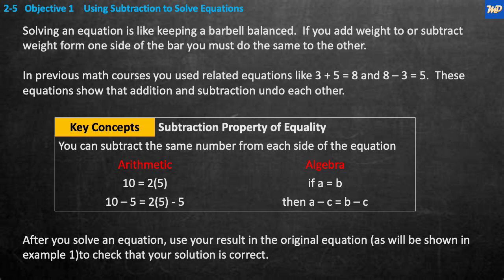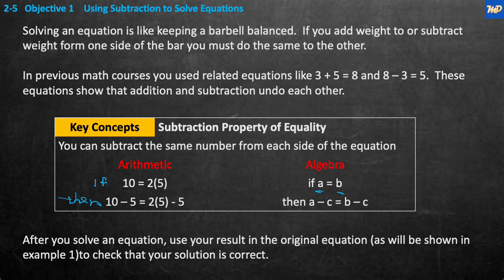You can subtract the same number from each side of an equation. Algebraically, if a equals b, then a minus c is equal to b minus c. In arithmetic: if 10 equals 2 times 5, then 10 minus 5 is equal to 2 times 5 minus 5. After you solve the equation, you use the result in the original equation to check that your solution is correct. You should always check — a small mistake in the math means the whole answer is wrong.